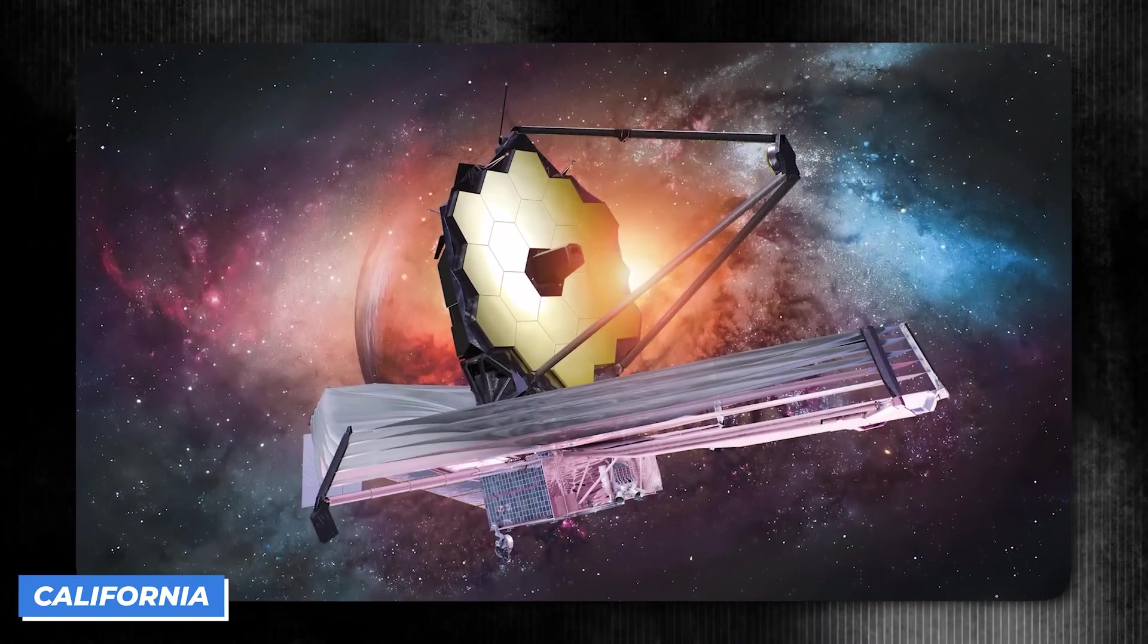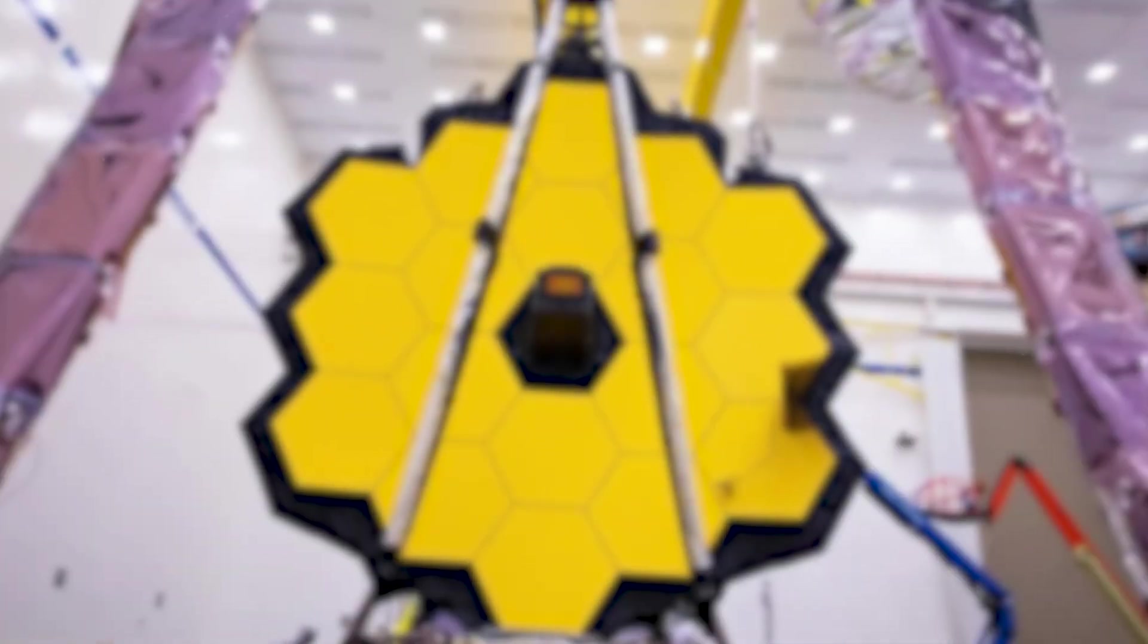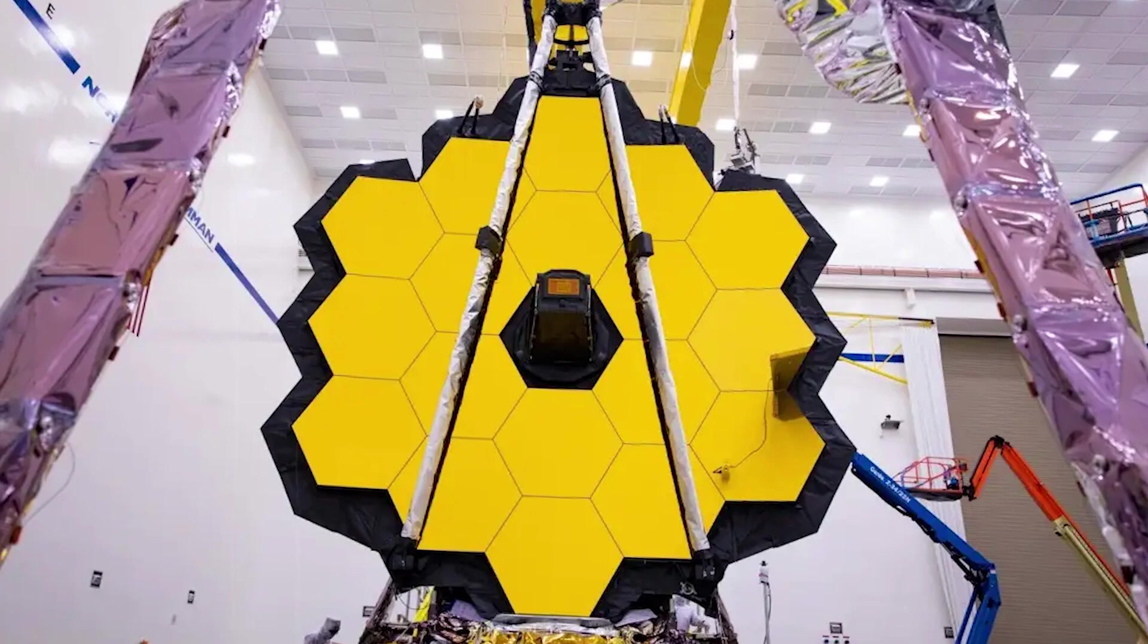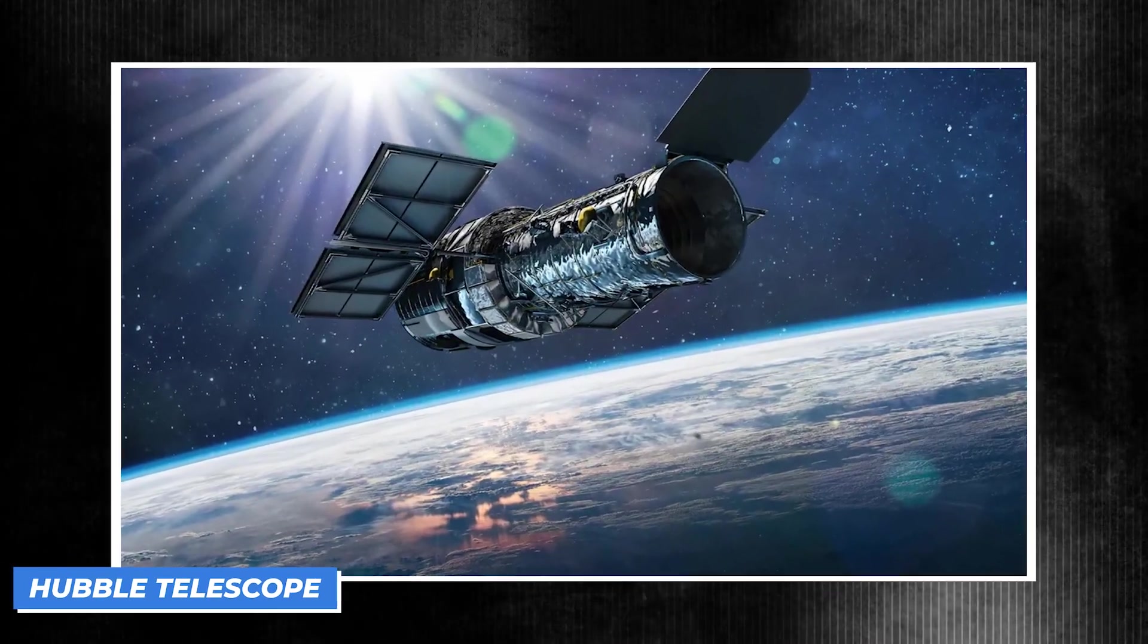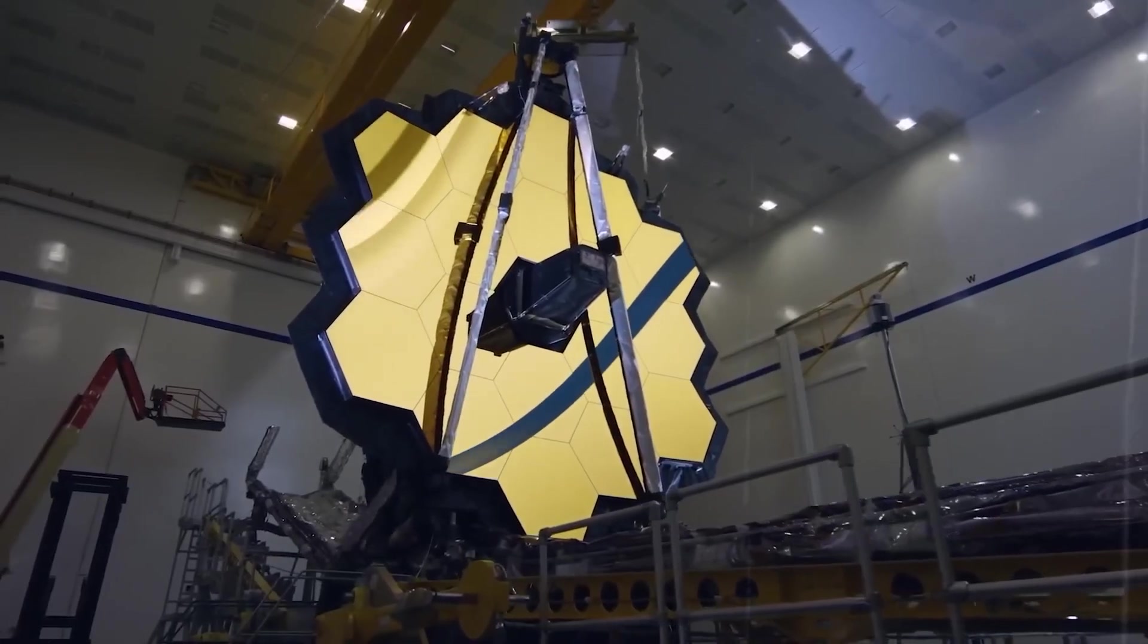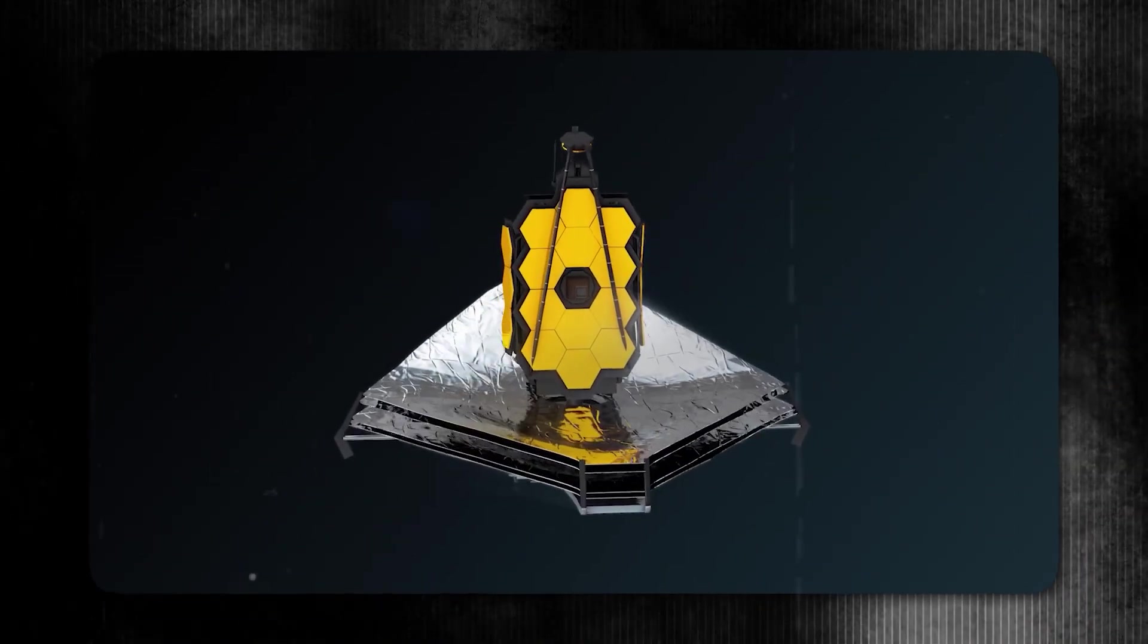The James Webb Space Telescope, JWST, surpasses all other space telescopes in power, including the iconic Hubble. Its design is so massive and intricate that it had to be folded like origami to fit inside the rocket that launched it into space.